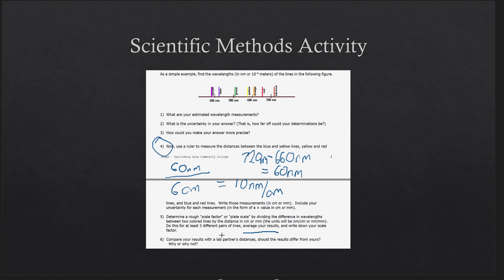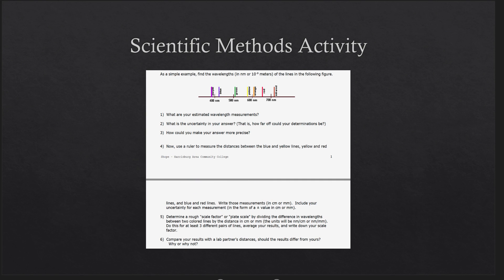The last section asks you to compare with a lab partner. In an online class we don't have lab partners, but there is a discussion board set up accessible through the lab module. You will need to post your average result there — I will be looking for that when grading. If you do not post, you will not get any credit for question six. Other students will have posted, so you can use those to compare how well you did.